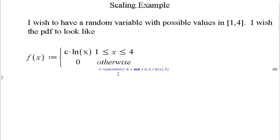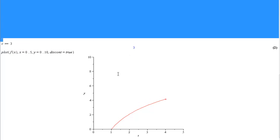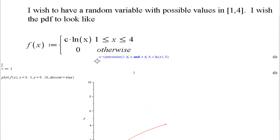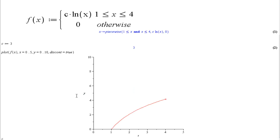If I graph this function, first I need to specify a value for c. So I let c equal 3, and I press enter. That draws a graph of my PDF. It increases logarithmically from x equals 1 to x equals 4, and it's 0 elsewhere. This is a piecewise defined function.